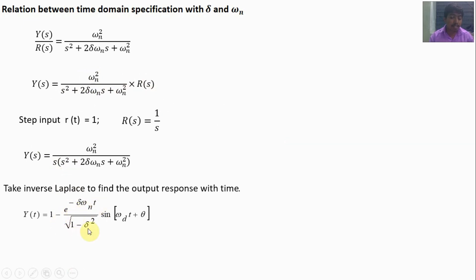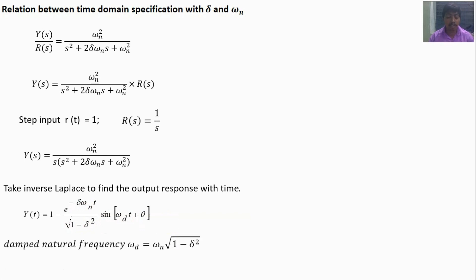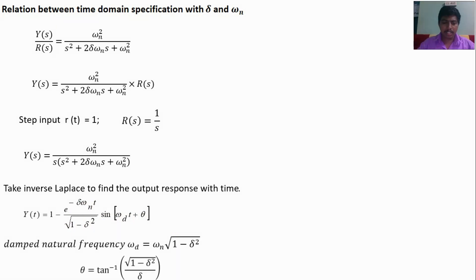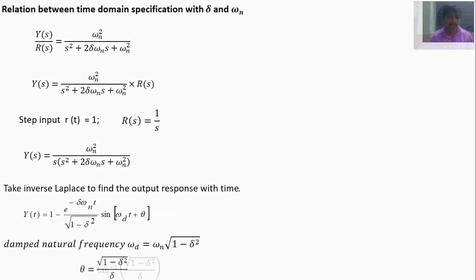We get: y(t) = 1 − [e^(−ζωn·t) / √(1−ζ²)] · sin(ωd·t + θ), where ωd = ωn·√(1−ζ²), and θ = tan⁻¹(√(1−ζ²) / ζ). For the step-by-step derivation, I have provided it in word format in the description box of the video.